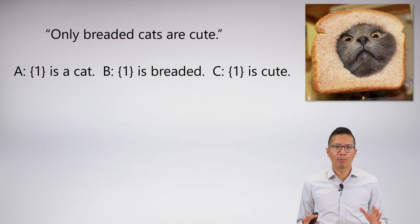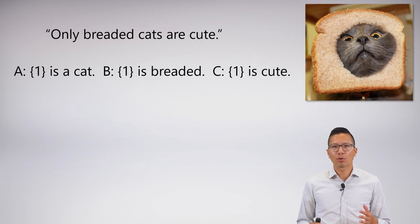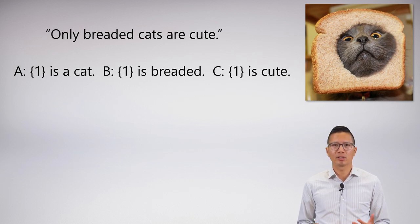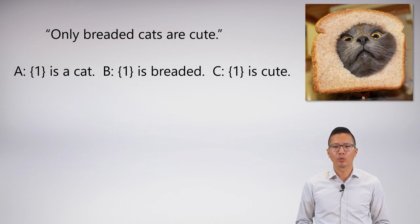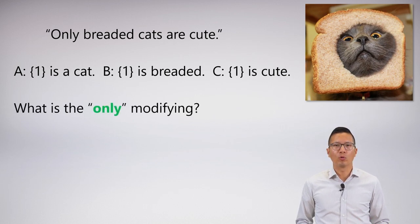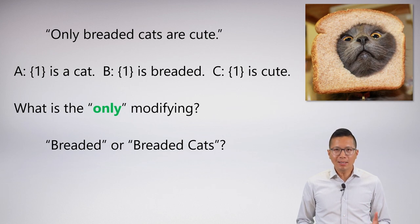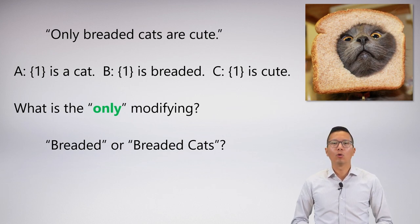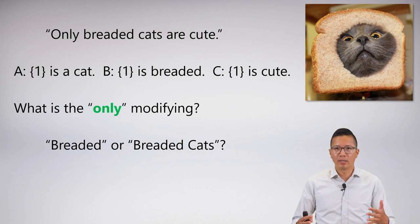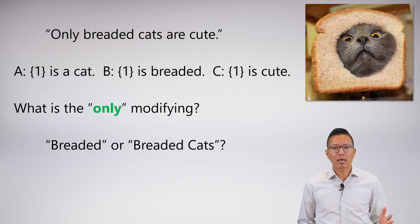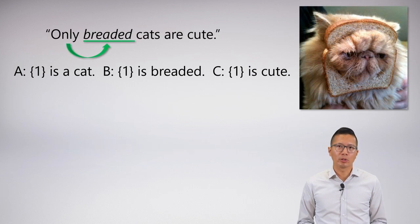Unfortunately, there are some problems with the word 'only' in predicate logic. These problems are a problem of reference — they're not really a problem of understanding what 'only' is saying. If I say 'only breaded cats are cute', the question is: what is the 'only' modifying? It seems that I have options. I could be modifying 'breaded', or I could be modifying 'breaded cats', or something else — it's a bit unclear.